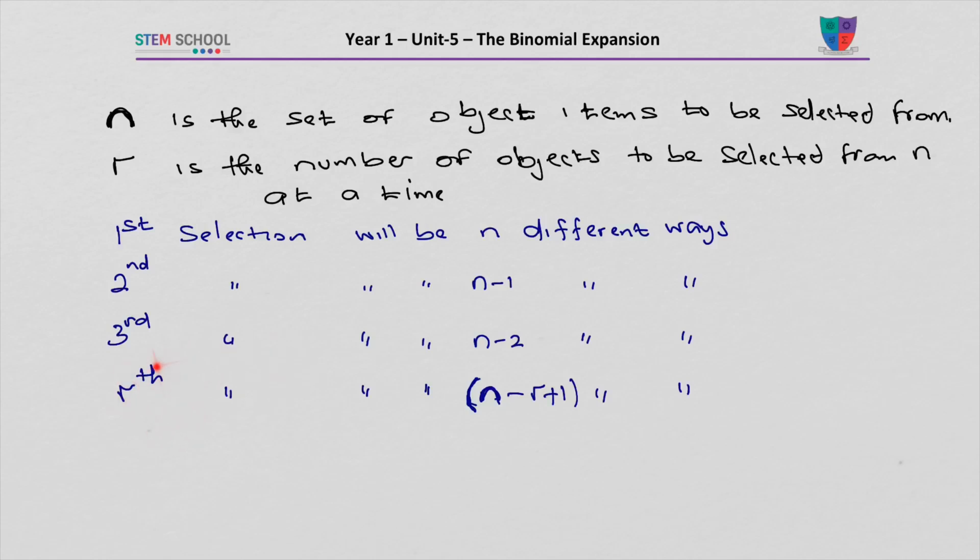Now the rth selection will be n minus r, but not r. It's going to be r plus 1. Because if r is 4th, then you will get n minus 4 plus 1. Minus 4 plus 1 is minus 3.